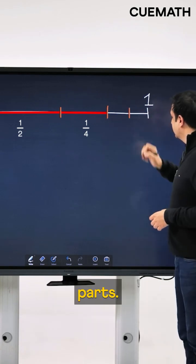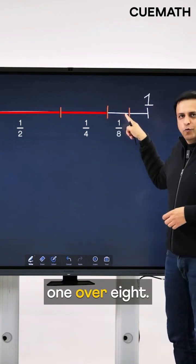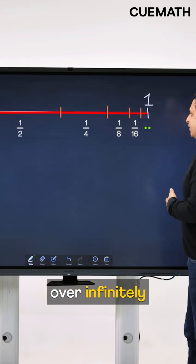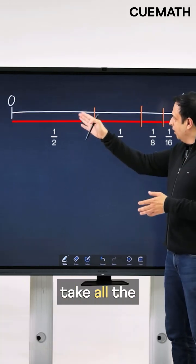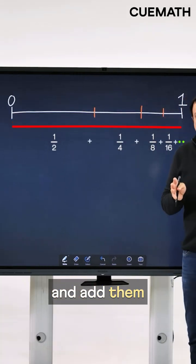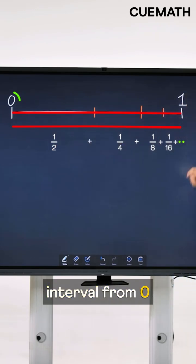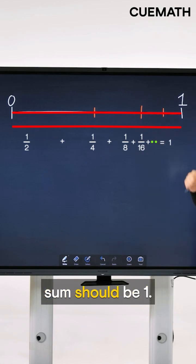Take the remaining part, divide it into two equal parts again. This is 1 over 8 now, color it red again. And keep doing this over and over infinitely many times. So when you take all the red segments now and add them all up, what do you think you will get? You will get back this unit interval from 0 to 1 and therefore the sum should be 1.